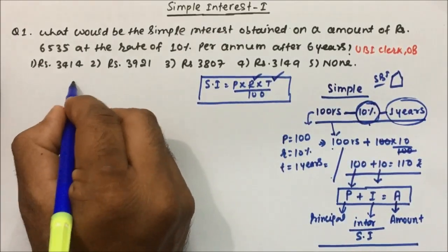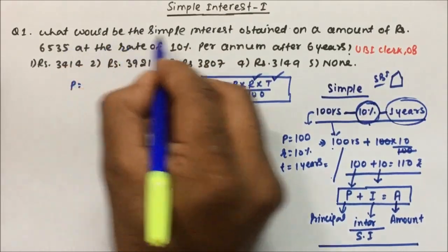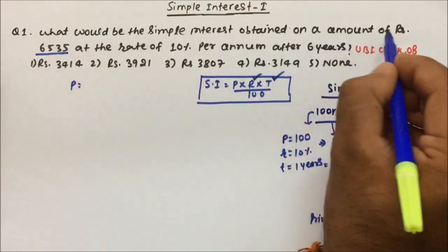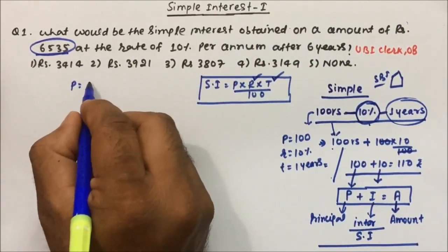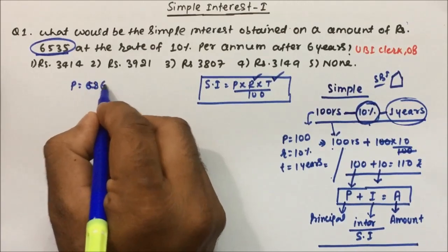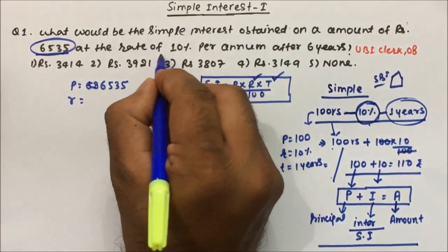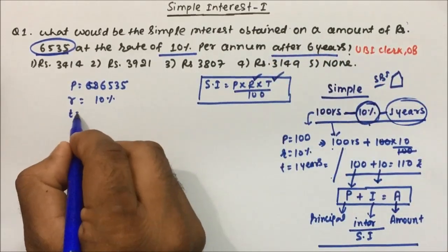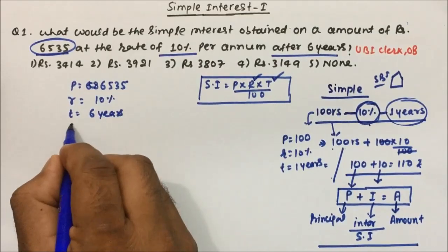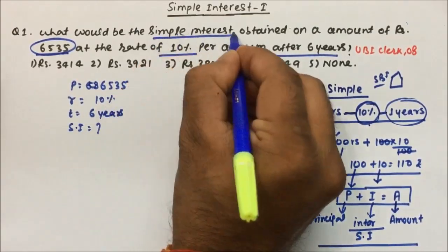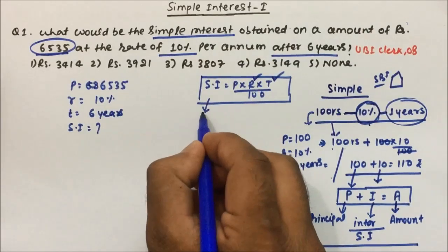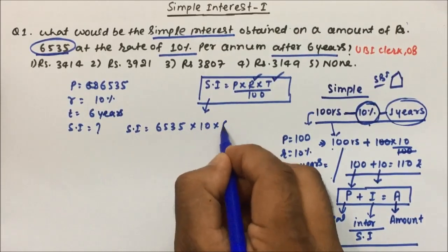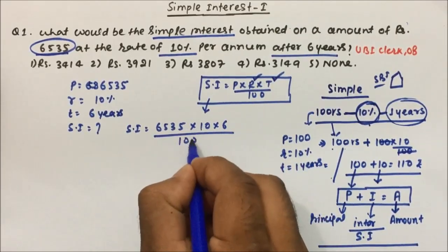Now in the question: what would be the simple interest obtained on an amount of ₹6535 at the rate of 10% for 6 years? So the principal P = 6535, rate R = 10%, time T = 6 years, and they are asking for simple interest. We put these into the formula: SI = (6535 × 10 × 6) / 100.